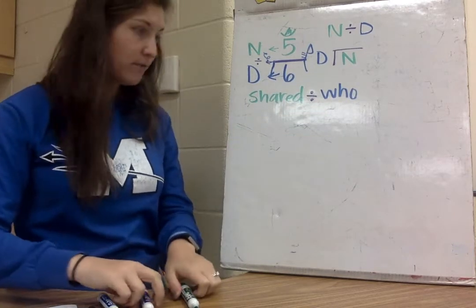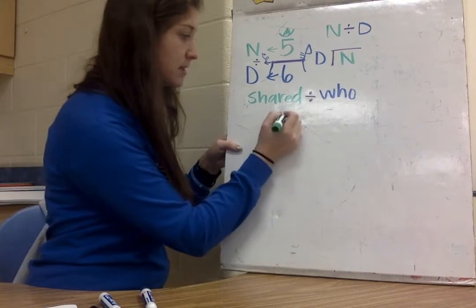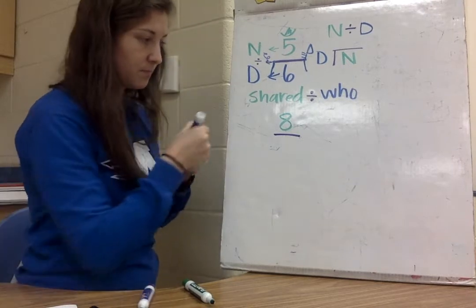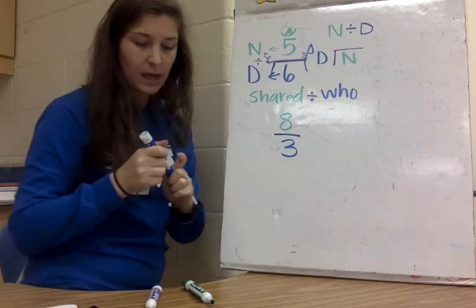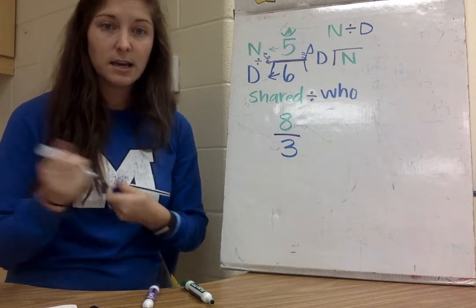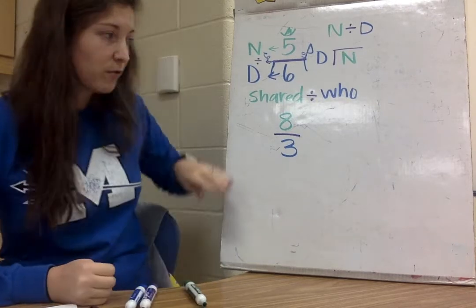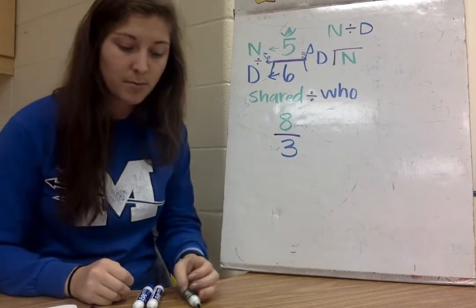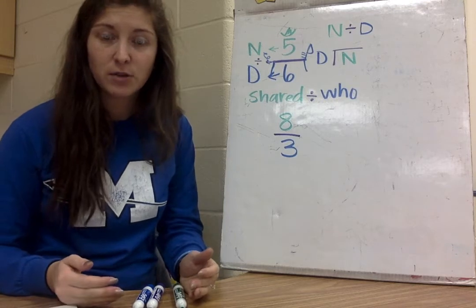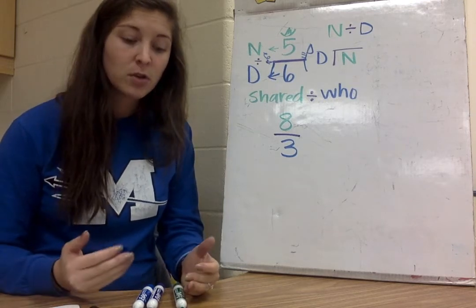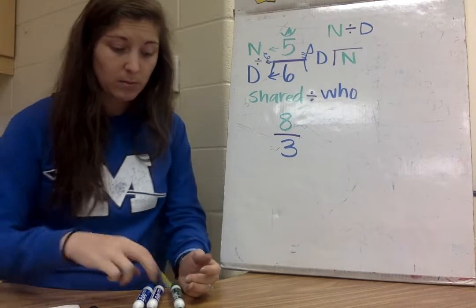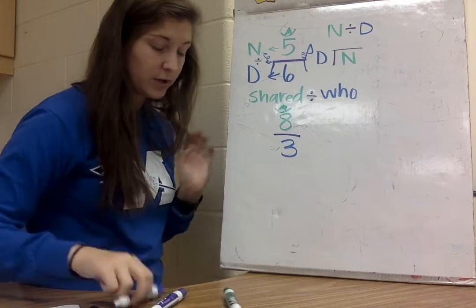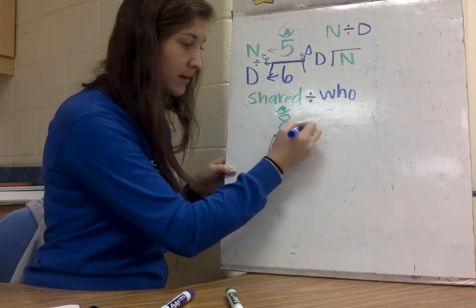We could also have an improper fraction. When we have an improper fraction, the numerator is bigger than the denominator. Improper fractions can be changed into mixed numbers. The way I do that is by solving the division problem, using the cowboy and horse approach to figure out which number goes inside my division house.